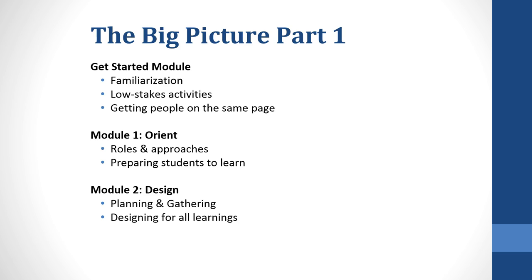Module 1 Orient: Changing roles and approaches to learning are essential when considering online and hybrid courses. Not only do instructors need to reorient themselves, but they need to be prepared to help or guide students to reorienting their own roles. The student may need some encouragement and direction about how to be more active and responsible for their own learning, while the instructor will need to let go of some of the teacher-centered focus to which a physical classroom lends itself.